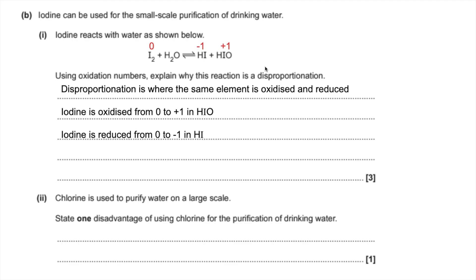One disadvantage of using chlorine for the purification of drinking water, I've got a couple of things here. Just need to say one of these. Chlorine is toxic, is the first thing I would go for. Or you could talk about chlorine when it reacts with organic matter in water. It can produce carcinogenic cancer-causing compounds, and an example of that is a chlorinated hydrocarbon.